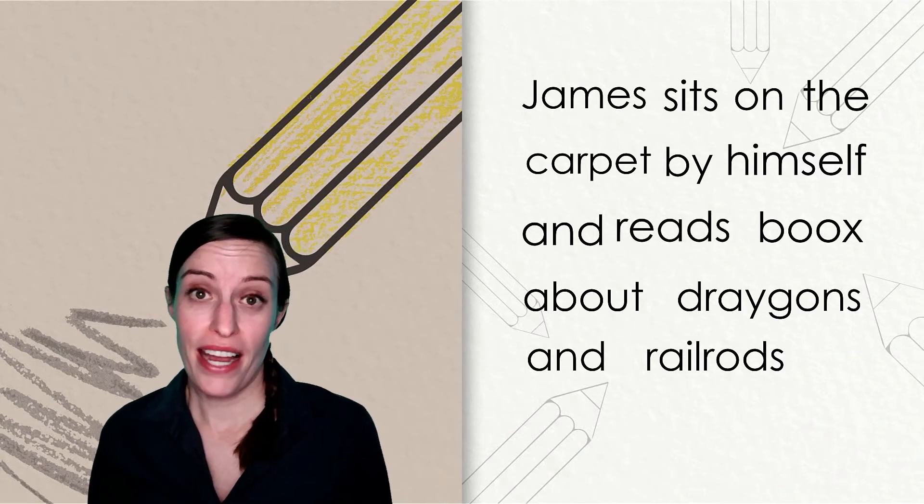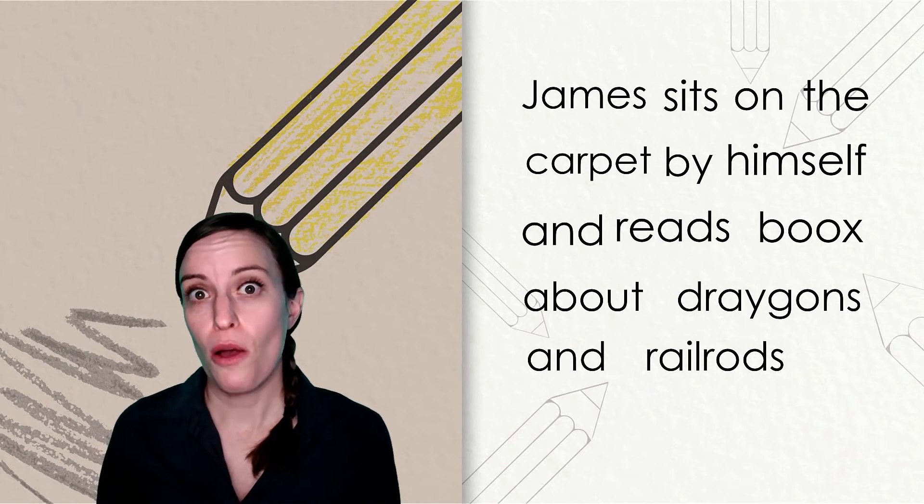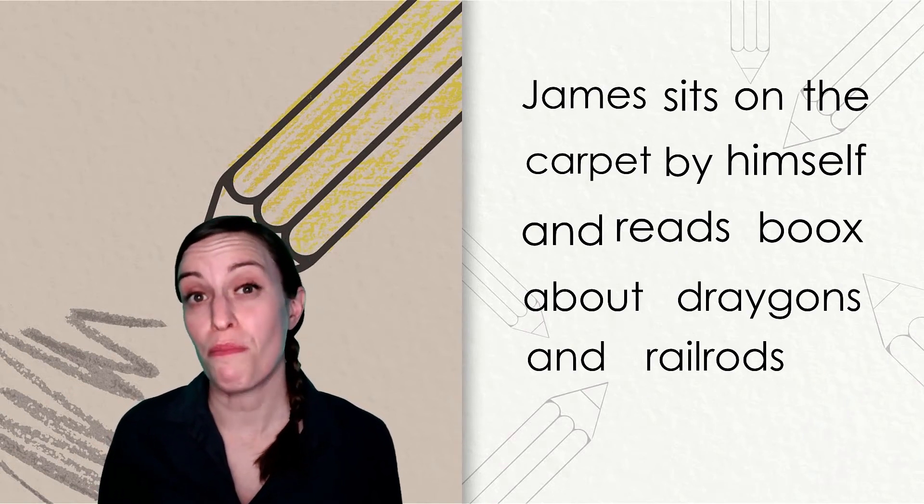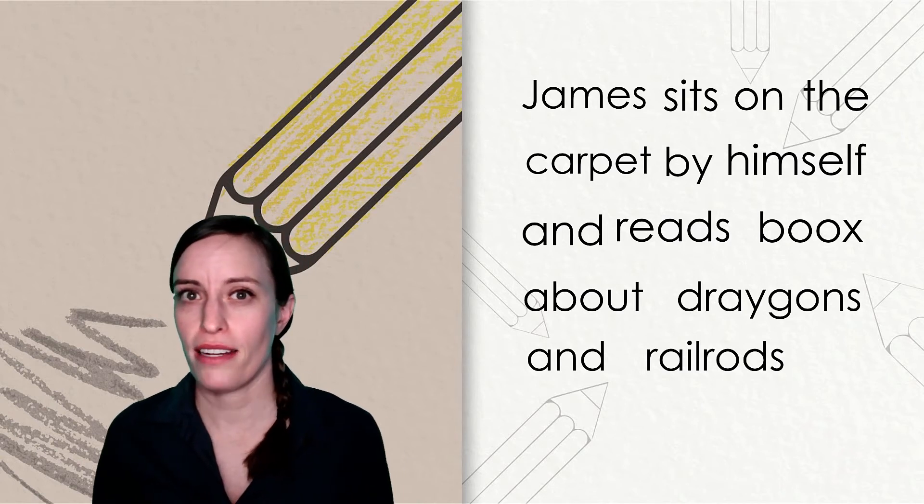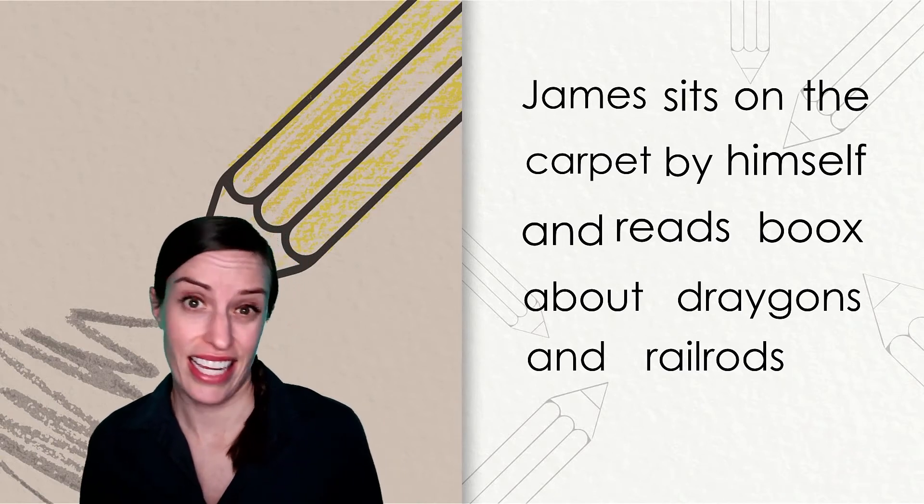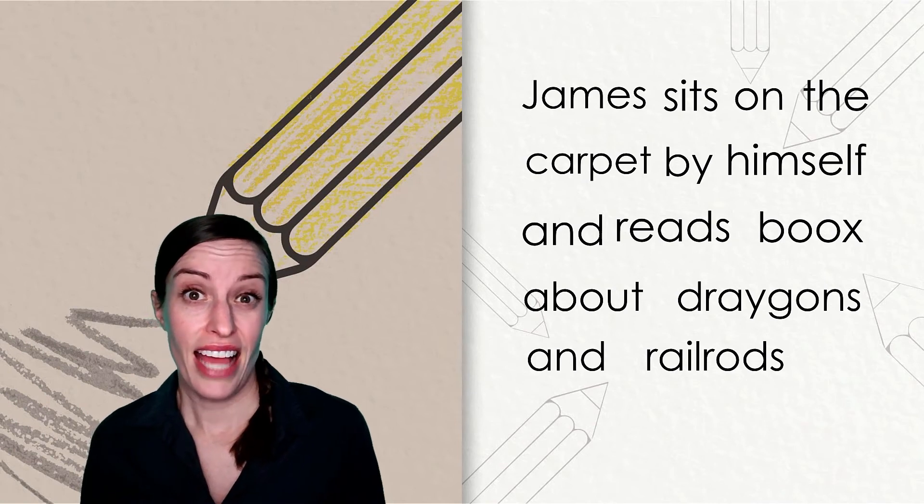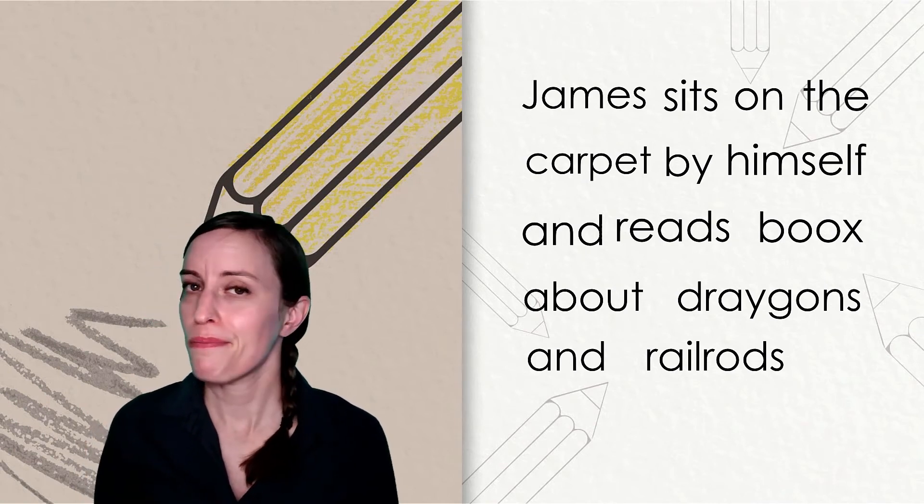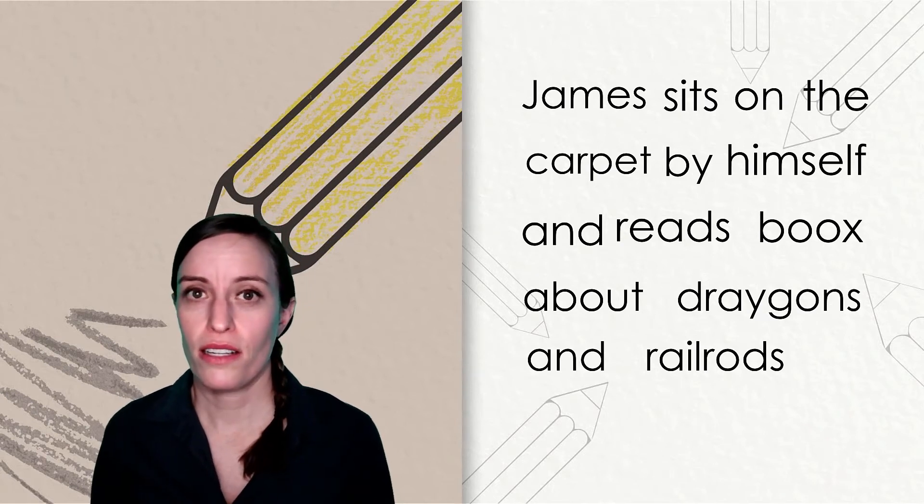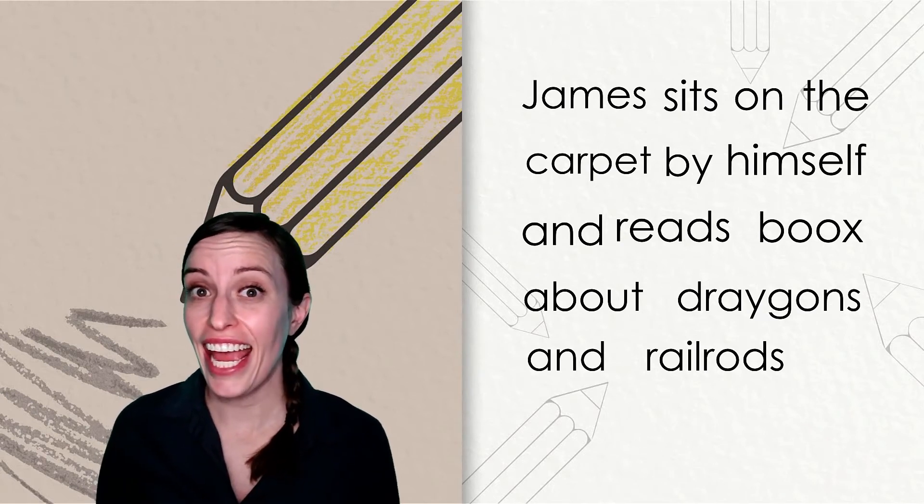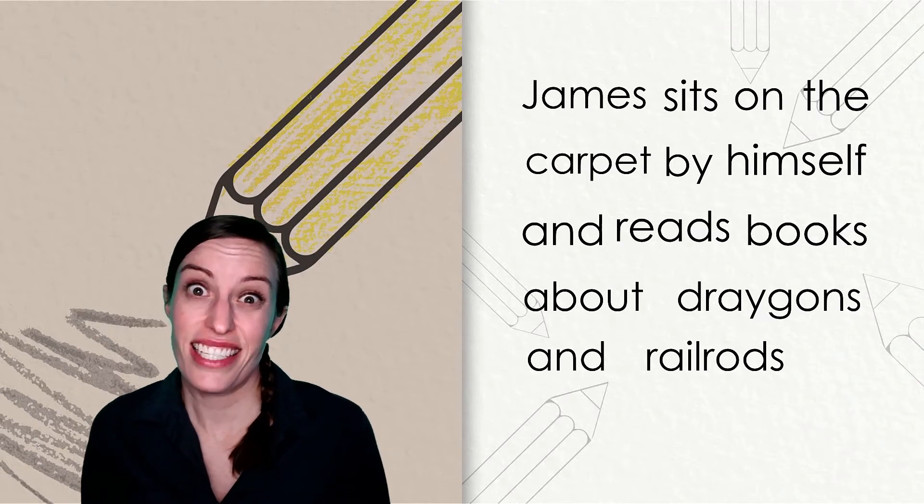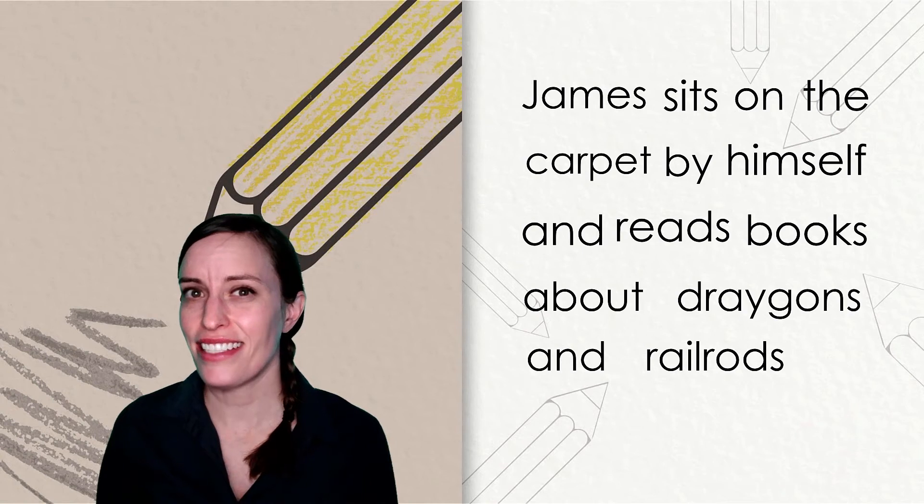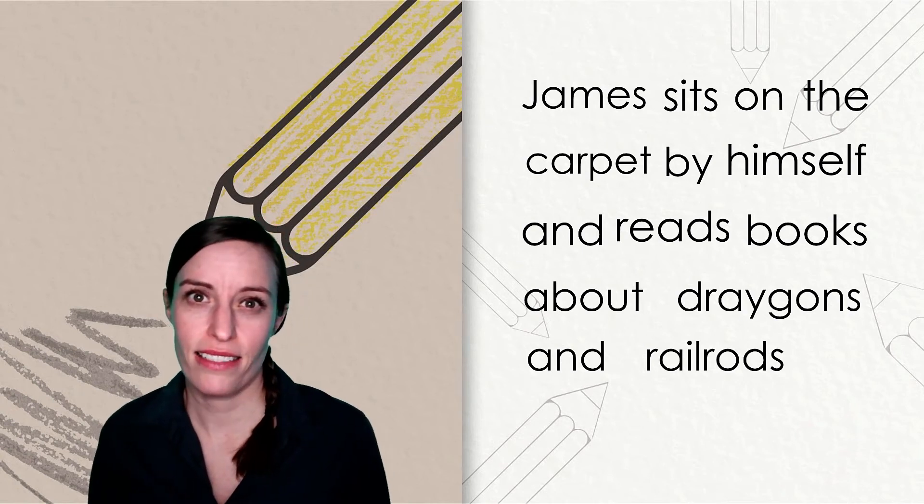He sits on the carpet by himself and reads books. James is reading books on the carpet, but that word books needs a second look. Having an X at the end of the word makes the correct sound, but that's not how it's spelled. We need the letter K and then the suffix S since he's reading more than one book. That K-S sounds a bit like an X.